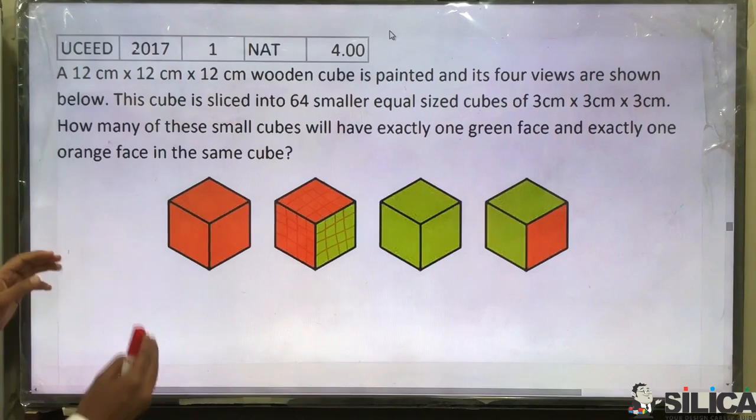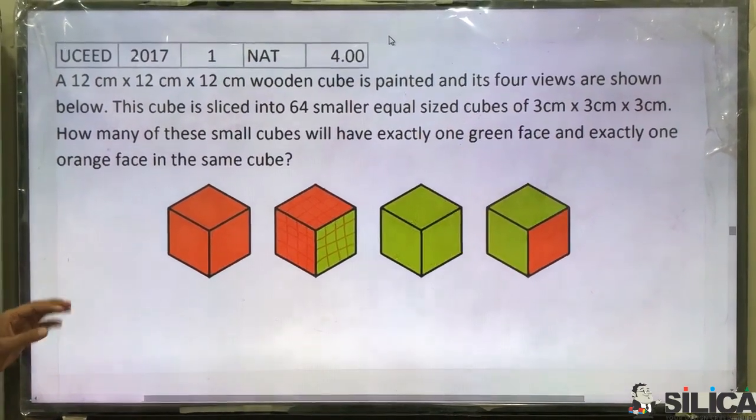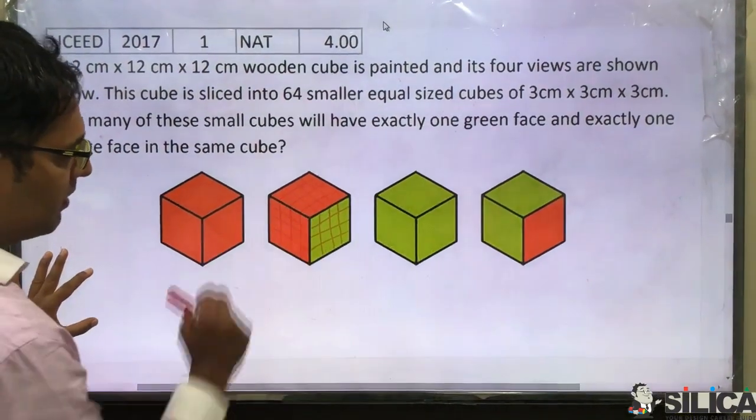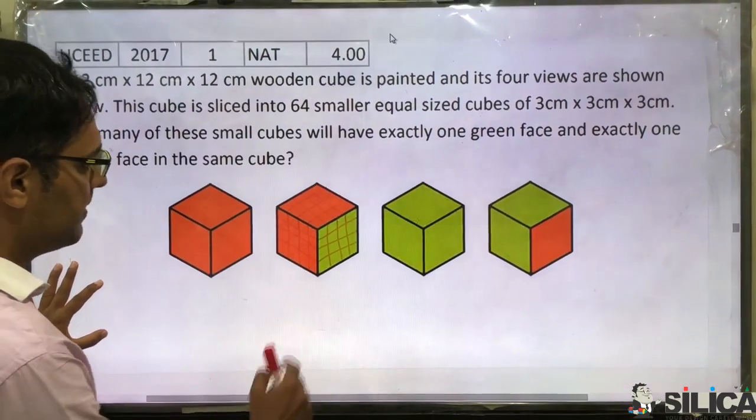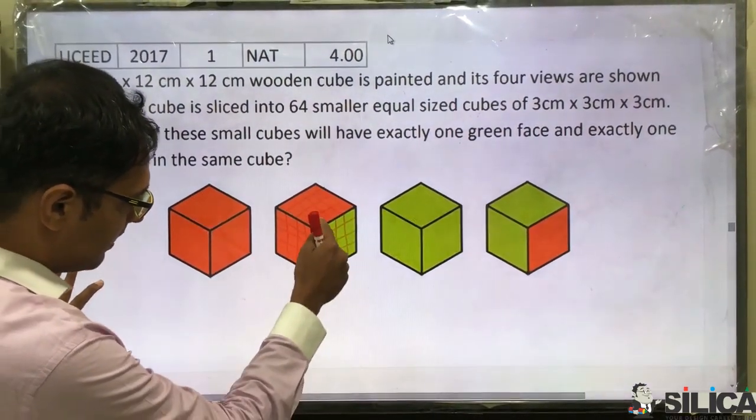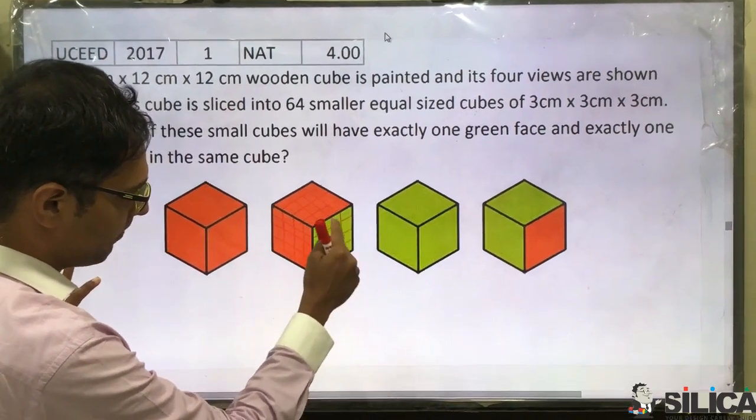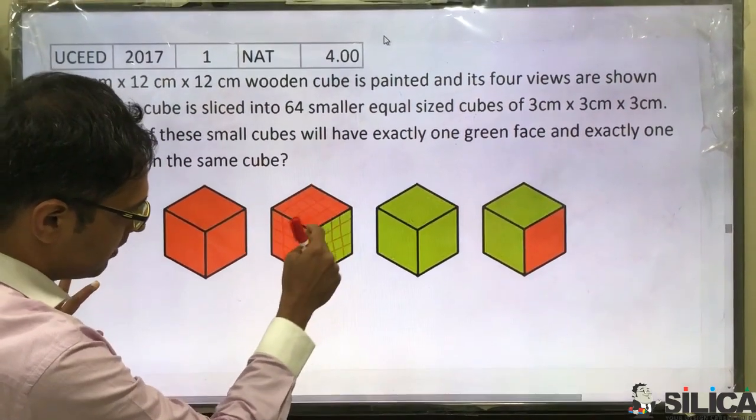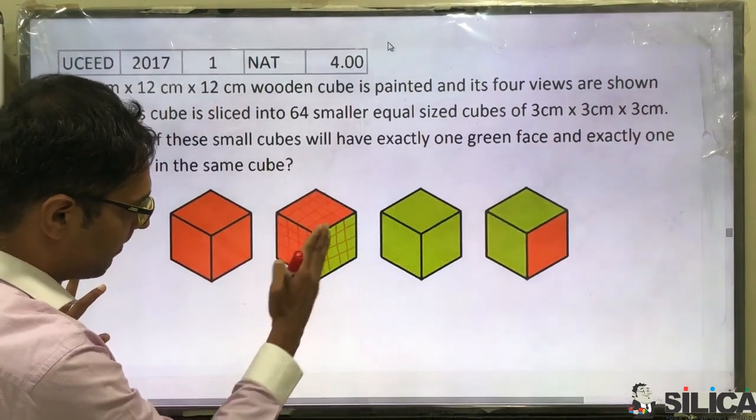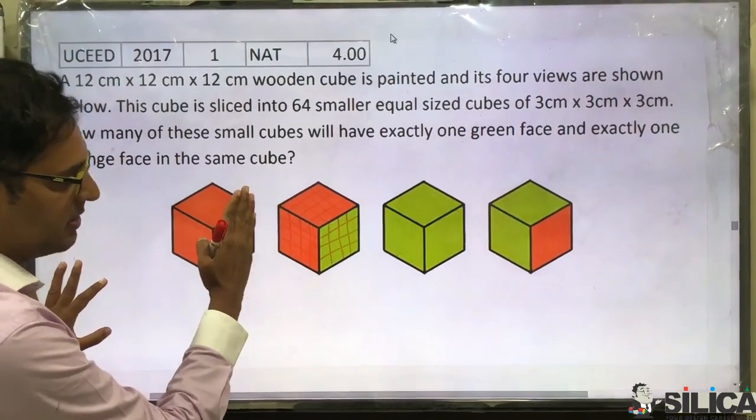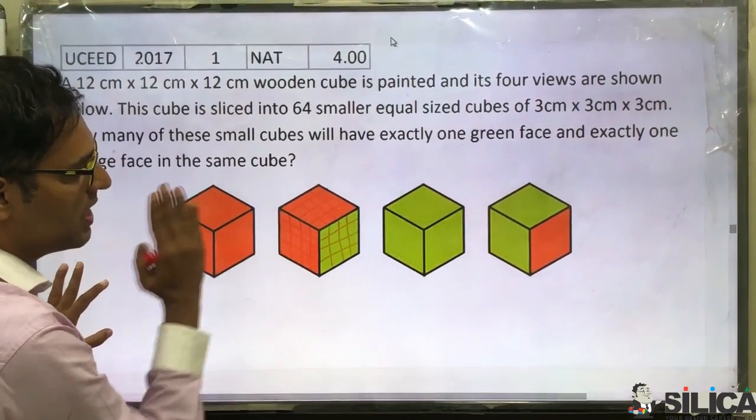Now first to understand how the smaller cubes are created, I have drawn some lines on this piece. If you see here, this is one small cube. There are 4 small cubes in one line. In the front face, there is 4 x 4, that's 16, and there are 4 such layers inside. So that's 16 x 4, 64.